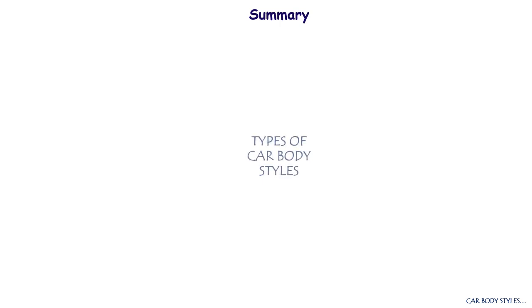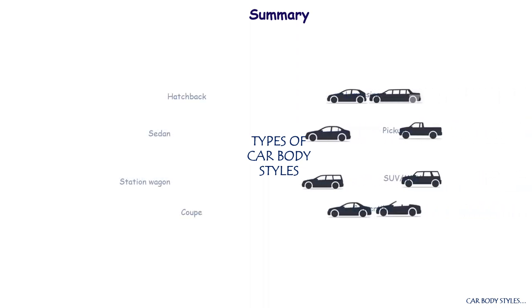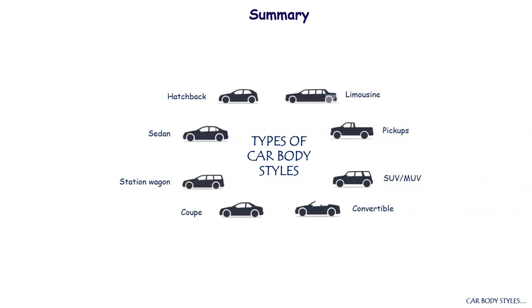Now let's summarize what we have discussed so far. We have analyzed and understood the basic types of car body details, such as different car styles, type of design — either a two-box or three-box design — and examples of popular cars corresponding to each particular style.